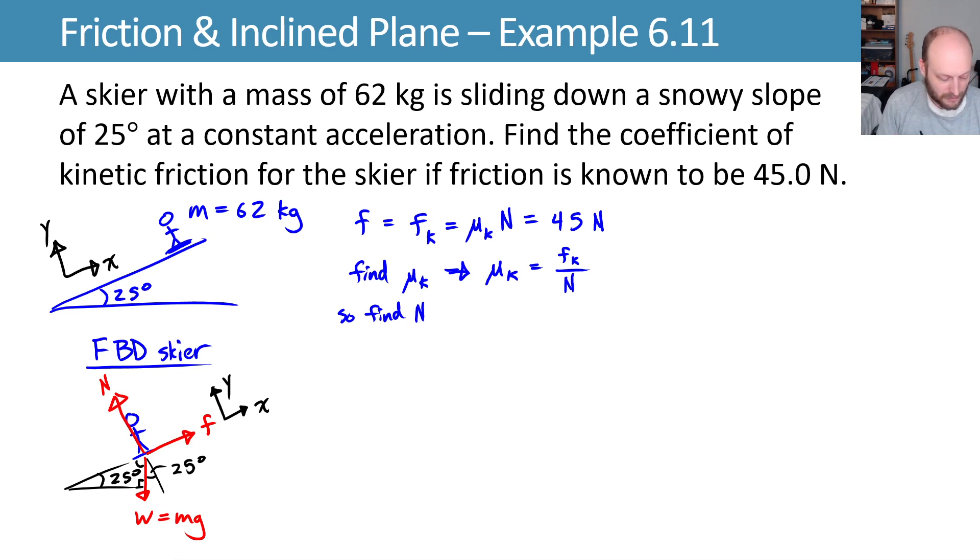Lovely. We can now use Newton's second law and hopefully find our normal force. Newton's second law says sums of the forces are equal to mass times acceleration. We can break that down into an x component—diagonally up the slope is my positive x component. So this will be f acting up the slope, and then we'll have the component of our weight that's acting in that direction, which is acting in the negative x direction as I've drawn it, so negative mg sin(25°). This is equal to mass times acceleration in the x.